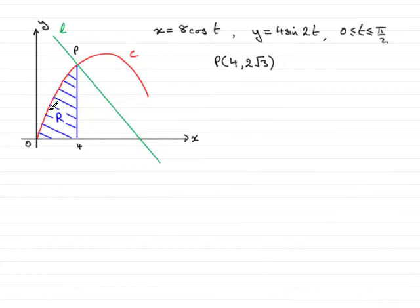In this question we're given the parametric equation of the curve C as being x equals 8 cos t and y equals 4 sine 2t, where t is between 0 and π/2.